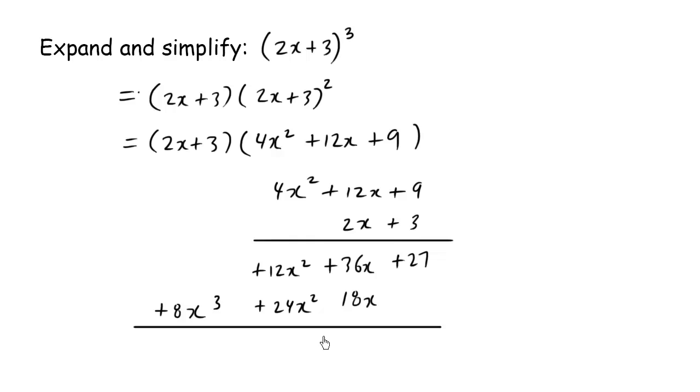And this is where we just drop everything down and add. And what we have is 8x cubed plus this is 36x squared, and this is a positive sign here by the way, plus 54x plus 27.